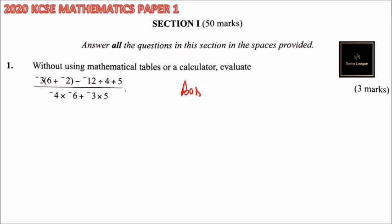So here we use what we call the BODMAS. BODMAS means Bracket, Of, Division, Multiplication, Addition, and Subtraction. This is the order of operation. In our numerator, we will start with the brackets. So we have minus 3, 6 plus minus 2, that will be 4.